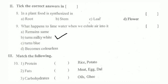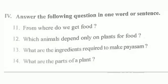The answer is: lime water turns milky white. Now let us start match the following. Protein, fats, carbohydrates — rice, potato, meat, egg, oil and ghee. The answer: carbohydrates — rice, potato; protein — meat, egg; fats — oil and ghee.